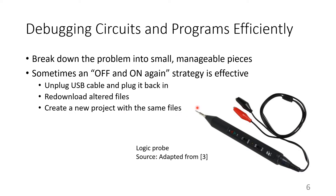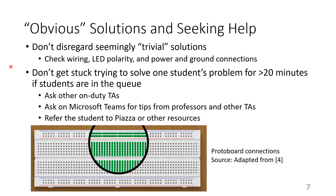A student can also use a logic probe, shown here, in order to test each connection to see if that connection is high or low. It is important to not disregard the seemingly trivial solutions that are often the solutions to problems students frequently have. For example, it's a good first step to check the wiring of a student's protoboard in case they misunderstand how the connections on the protoboard are set up. It might also be worth checking the polarity of the LED, and often a good strategy is to check the power and ground connection of each chip, because if that's set up incorrectly, you can get very strange outputs.